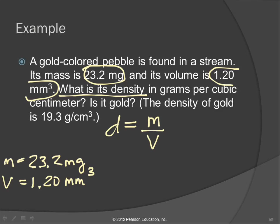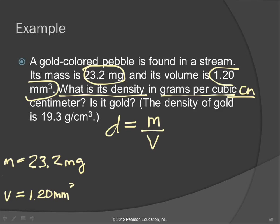We need the mass in grams and the volume in cubic centimeters. To convert milligrams to grams: milli on the bottom, ten to the minus three on top — so this gives 0.0232 grams, or 2.32 times ten to the minus two in scientific notation. Then we also need to convert cubic millimeters into cubic centimeters. There are ten millimeters in a centimeter. Anytime we're converting between two units that both have prefixes, we should do it as two steps — millimeters to meters to centimeters — and we'll deal with cubing those as well.